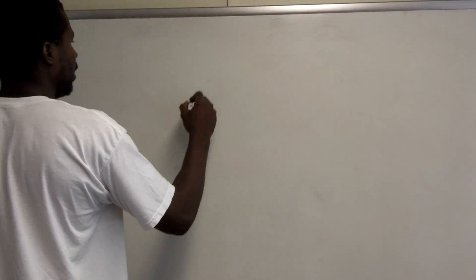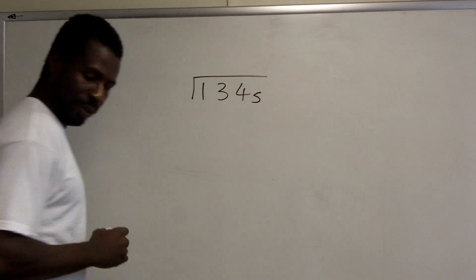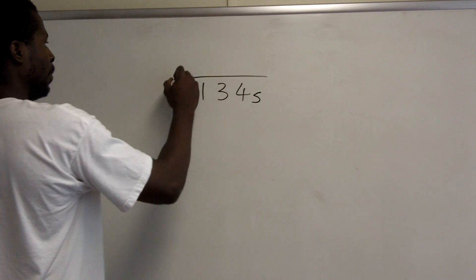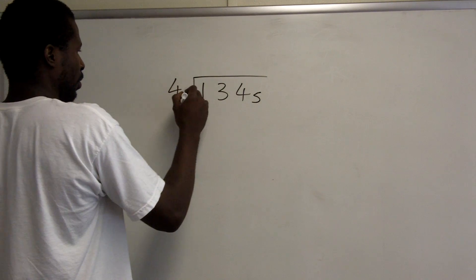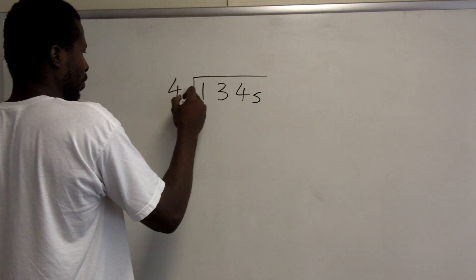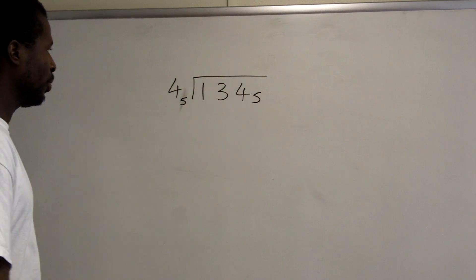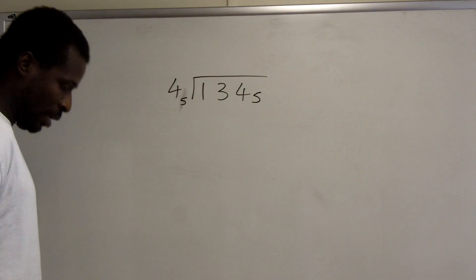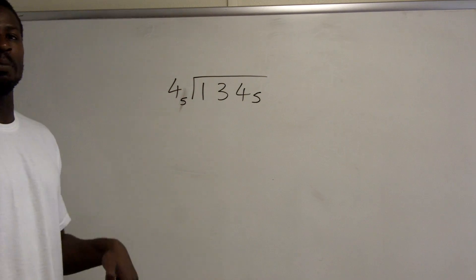So now we will divide in all the bases. What I want to do is divide 134 base 5 by 4 base 5. So 134 base 5 divided by 4 base 5. In order to do this division, I have to know the multiplication table for base 5.